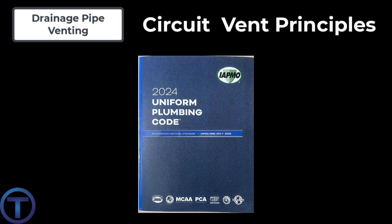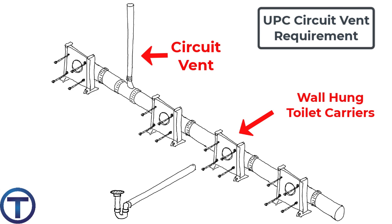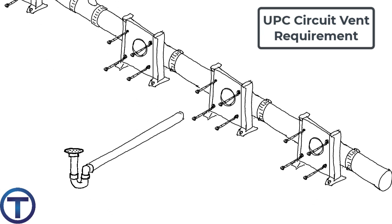There is one exception that is different with the Uniform Plumbing Code. It states that back outlet and wall hung toilets may be circuit vented as long as no floor outlet fixtures are connected to that horizontal branch. This makes sense in that these fixtures — back outlet or wall hung toilets — will be higher in elevation than any of the fixtures connected below in the floor. This point emphasizes that connections to the circuit vent must be on the same horizontal plane, all connecting horizontally.